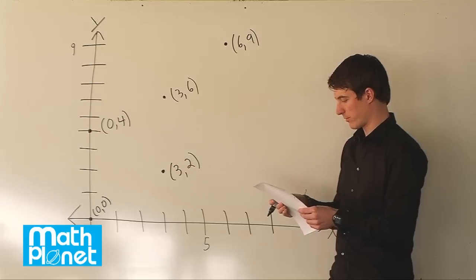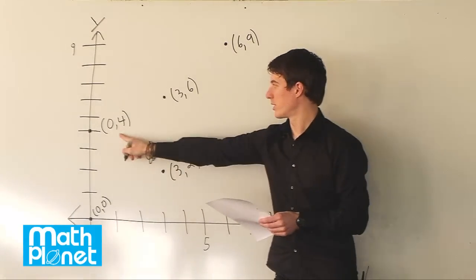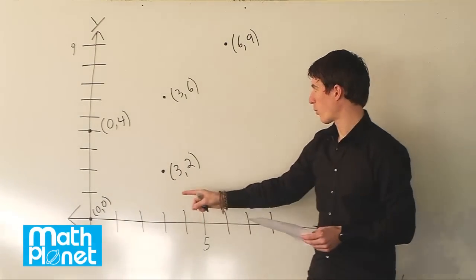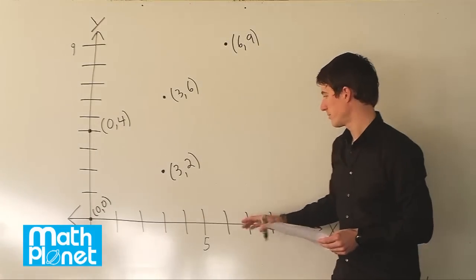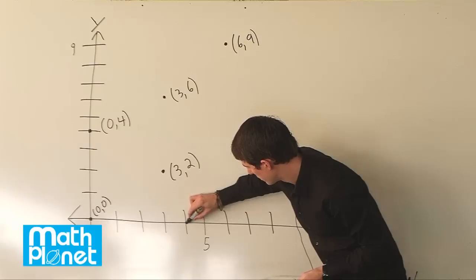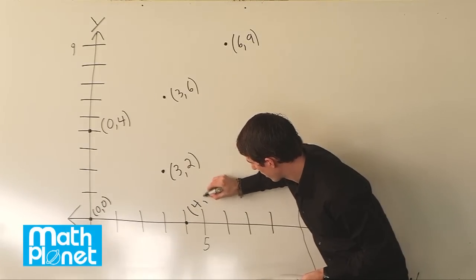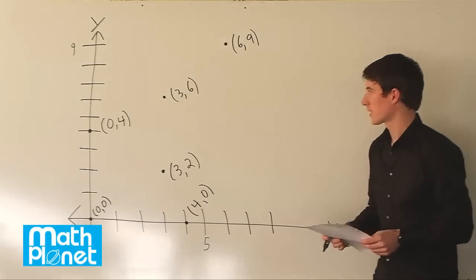And lastly, we have the point 4, 0. So not 0, 4 like this one, but 4, 0. So y is 0. We're on the x-axis and we're at the point x equals 4. So here we have the point 4, 0. And that's all of them.